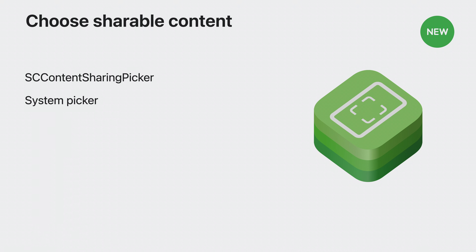SCContentSharingPicker has a built-in system-level content picker that enables one to pick content based on windows, apps, or even displays. Whether one initiates the selection through a button in your application, the new video menu bar, or directly from a window, your application can take advantage of SCContentSharingPicker to add, remove, or replace the active selection for any of your ongoing streams.